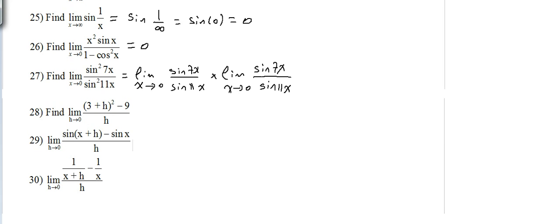This is simple now because in the previous part — part 6 — we explained what is the limit of sine(ax) over sine(bx) as x tends to 0, which equals a over b. So it's 7 over 11 for one limit, and 7 over 11 for the other. That gives us 49 over 121, and this is the answer.